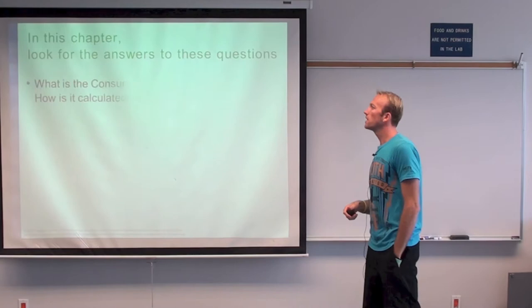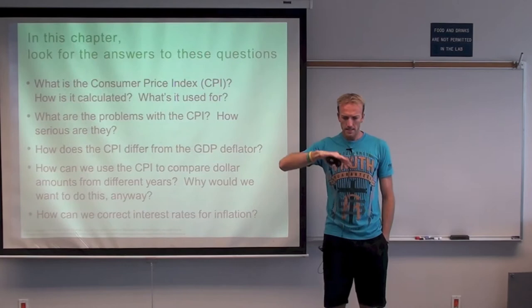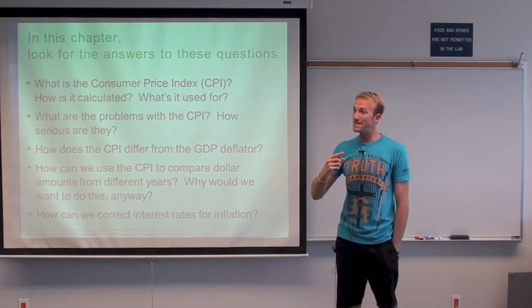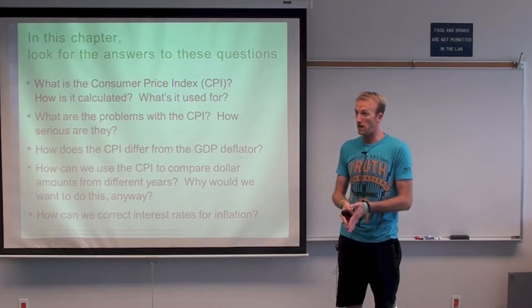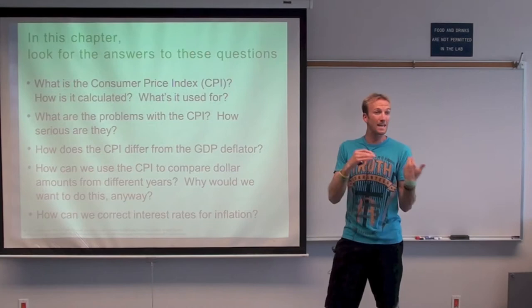Here's what we're going to be looking at: what is the consumer price index and how is it calculated. As a reminder, last chapter was chapter 10 and we measured the GDP — the gross domestic product — which, although it is in dollars, is actually a measure of stuff, of products that are produced.